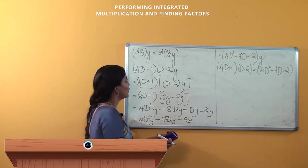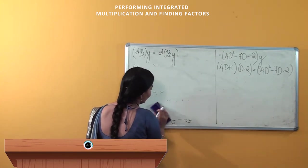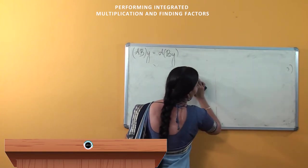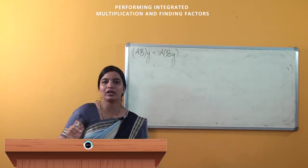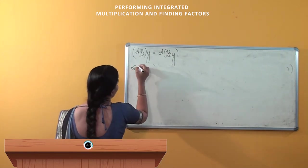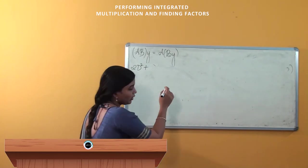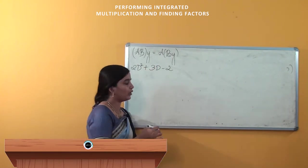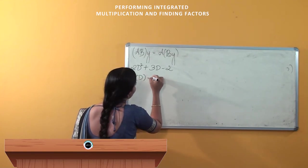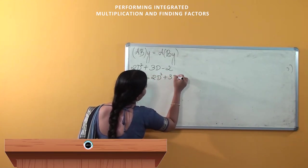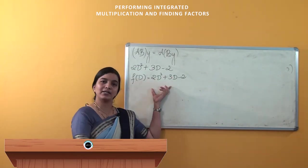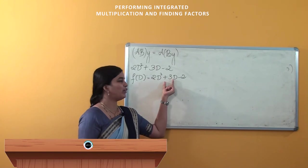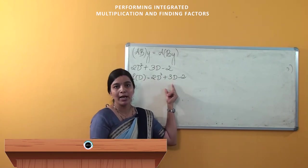Now, one more thing is asked. You have already factorized quadratic, cubic, or 4th degree equations before. Now, how can we factorize a given differential operator? The differential operator given is 2D² + 3D − 2, and we are asked to factorize it. We consider F(D) = 2D² + 3D − 2. Factorizing this is the same as factorizing a quadratic equation: on multiplication you should get −4, and on addition or subtraction you should get +3.